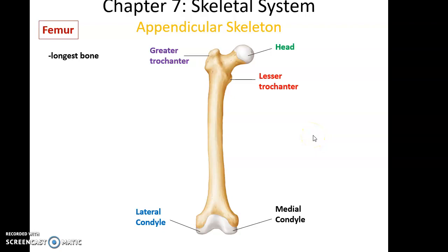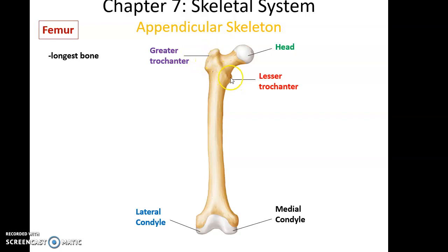Here is the femur. The femur is the longest bone in the body, found in the thigh. It has a large smooth rounded knob called the head. The head of the femur fits into the acetabulum of the os coxae. Then there's a large lateral rough patch called the greater trochanter, and a bit lower is a lesser trochanter, also a rough patch but smaller. Down at the distal ends, we have two rounded knobs: the lateral condyle and the medial condyle. The medial condyle is on the same side as the head, because the head faces medially.